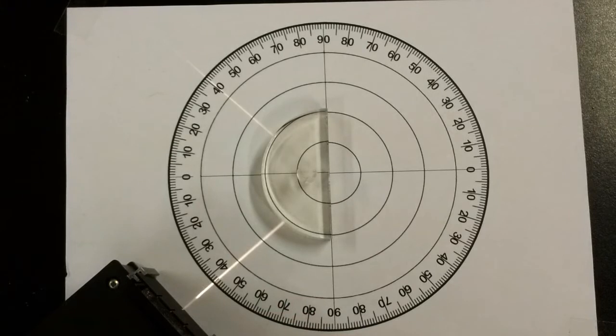The critical angle is the angle of incidence in the more dense medium that will produce total internal reflection. It is the smallest angle of incidence that will produce total internal reflection.